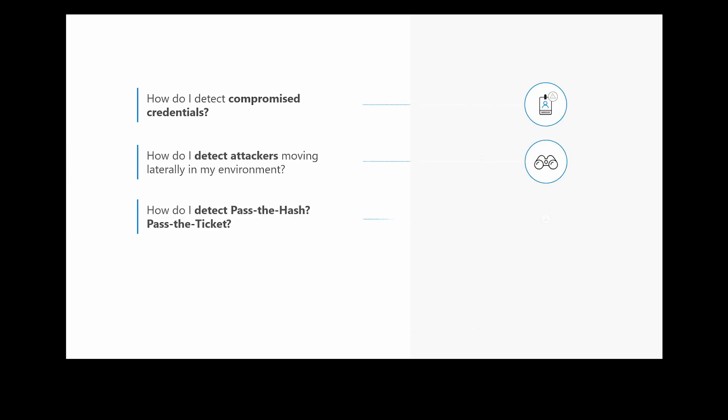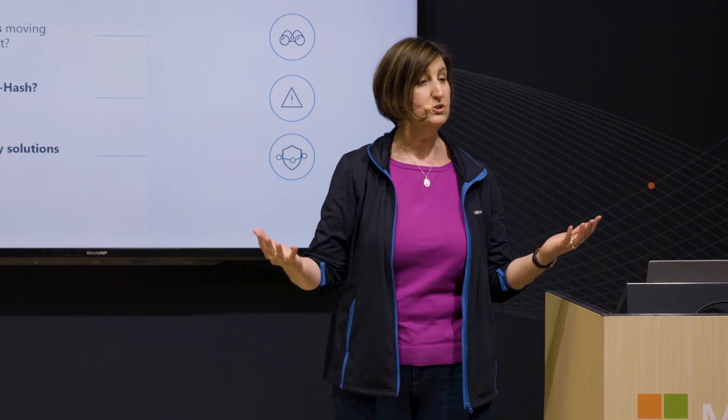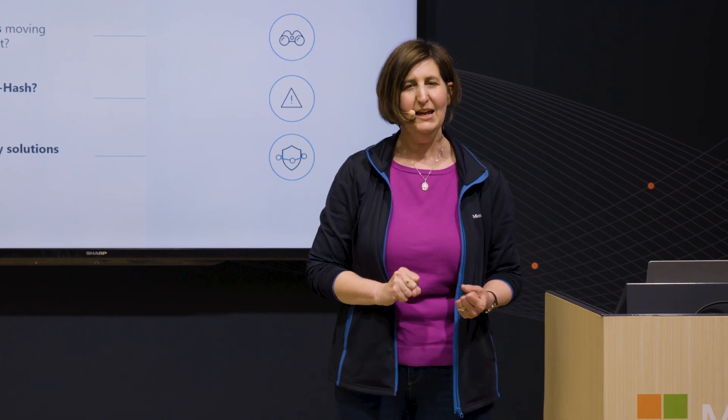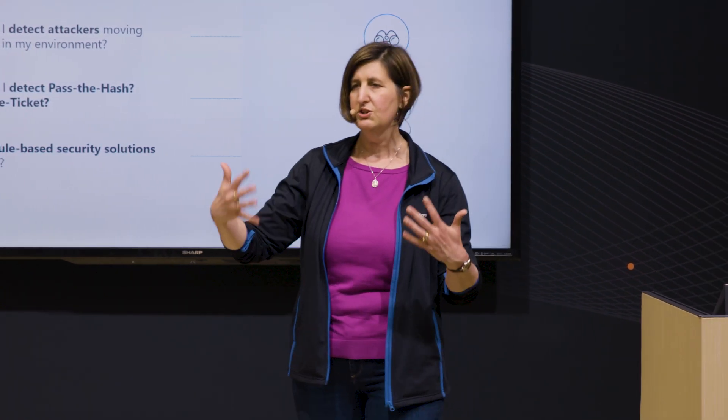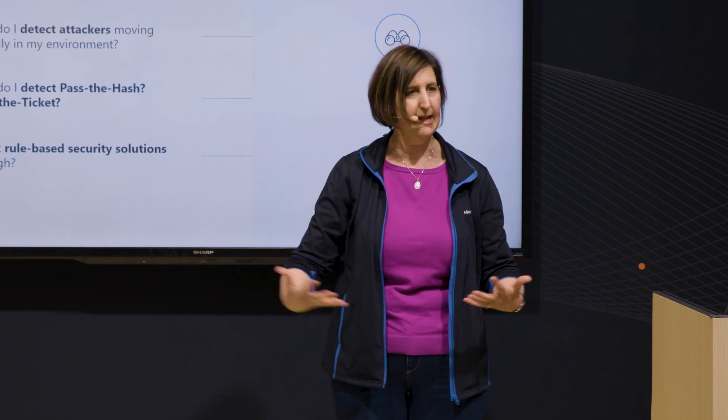So the question is, today in your environment, how do you find those compromised credentials? How do you know when someone's laterally moving through your environment? This is an attacker with a normal user ID moving between machines and effectively changing their identity. Some of the lateral movement techniques typically used by attackers — things like pass the hash and pass the ticket. I don't need your password anymore; I can steal your password hash from the memory of a machine, or steal your Kerberos ticket from an environment and use that to impersonate you somewhere else. Those are notoriously hard things to detect.